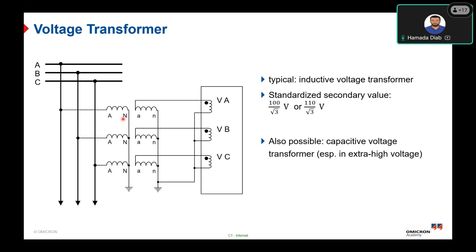The primary side of the voltage transformer is represented by capital A and N, and the secondary side by lowercase letters. The standard secondary voltage is 100/√3 V or 110/√3 V. Another type is the CVT — capacitive voltage transformer. According to the voltage level, there are different variants depending on the network voltage level, the protection scheme, and the application, which should be chosen at the start of substation design. The instrument transformer also provides isolation between the primary and secondary sides connected to the protection relay.